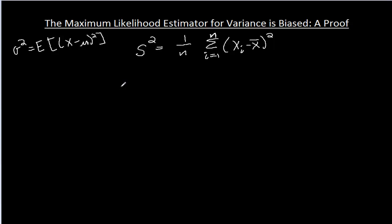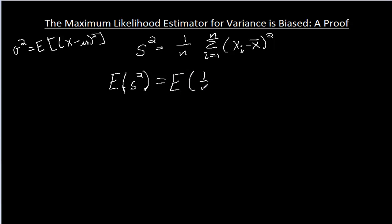It usually underestimates, and on average it's going to underestimate the variance. We're going to show that by taking an expectation. If I think of this s² as a random variable — because it's derived from these n random variables xᵢ, and x̄ is just the average of those random variables — then that's the expectation of 1 over n times the sum from i equals 1 to n of (xᵢ minus x̄) squared.